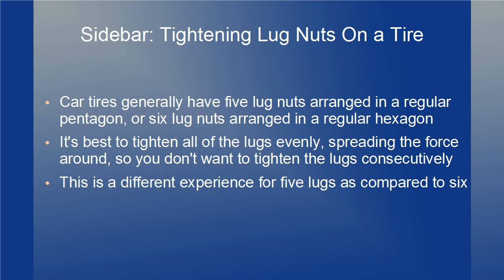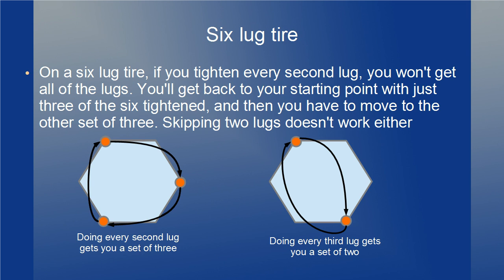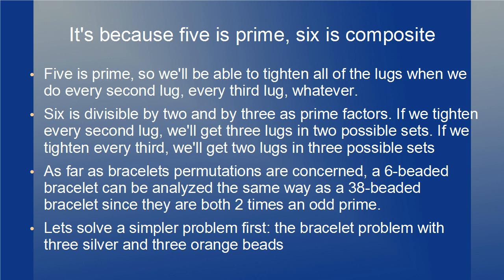Here's a sidebar to talk about why prime numbers are important in the analysis of bracelet permutations. Car tires generally have 5 lug nuts arranged in a regular pentagon or 6 lug nuts arranged in a regular hexagon. If you've ever worked on tires, you know it's best to tighten all of the lugs evenly. So you don't want to tighten the lugs consecutively. On a 5-lug tire, instead of tightening consecutively, you can tighten every second lug and you'll encounter every lug before you're back to your starting point — it makes a star pattern. On a 6-lug tire, you won't get all of the lugs; you'll get back to your starting point with just 3 of the 6 lugs tightened. This is because 5 is prime and 6 is composite.